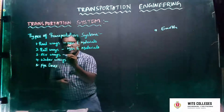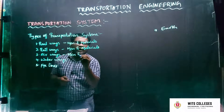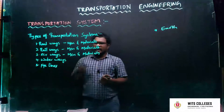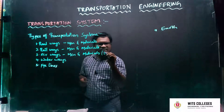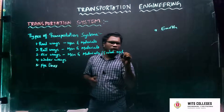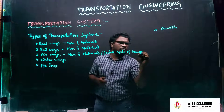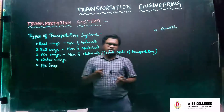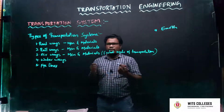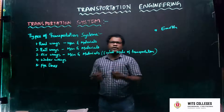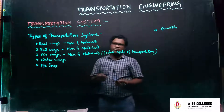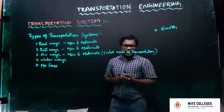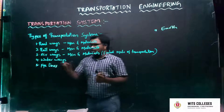The next one is airways. In airways, men and materials can be transported. It is the fastest mode of transportation. Using airways, we can connect to each and every corner of the world — we can move from one country to another country, from one continent to another continent, different countries or different states or different districts. Airways is the fastest mode of transportation system and also the costliest mode of transportation system.